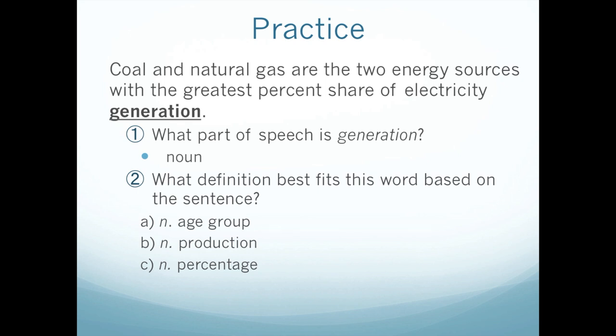Now try and think which definition best fits this word based on the sentence. Remember, some words have more than one definition, so you have to think based on what they're talking about in the sentence and the context. We know it's a noun, so if you see definitions A, B, and C, they're all nouns — so the part of speech won't help us much here. Is it A, age group; B, production; or C, percentage? If you said B, production, you're correct. Generation can mean age group, but in this sentence it doesn't mean that. When we talk about electricity generation, we're talking about how much electricity it produces — so production.